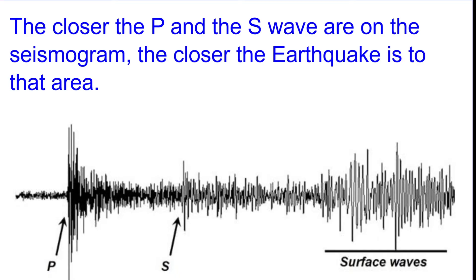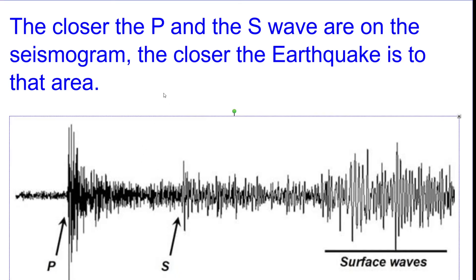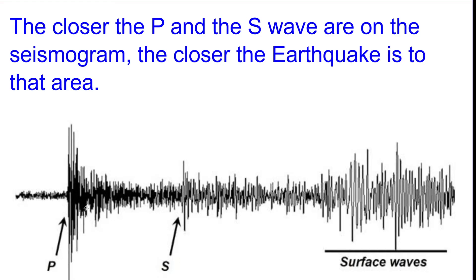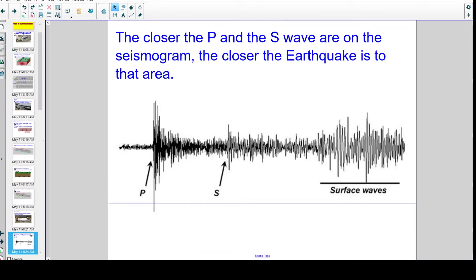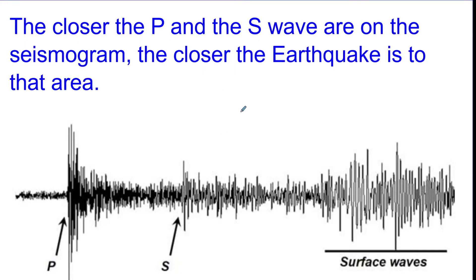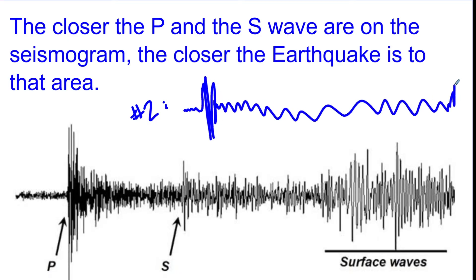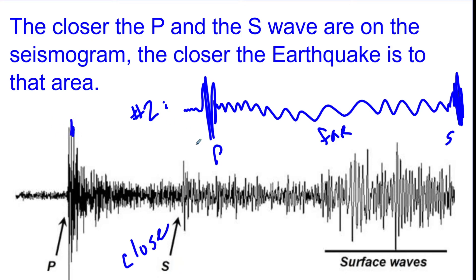For example, if this P wave is pretty close to this S wave, the earthquake probably was really close to the location. If you had a lot of time between the P wave and the S wave, that would be far away — compared to a close one where there's less distance between where the P wave and the S wave are on the seismogram.